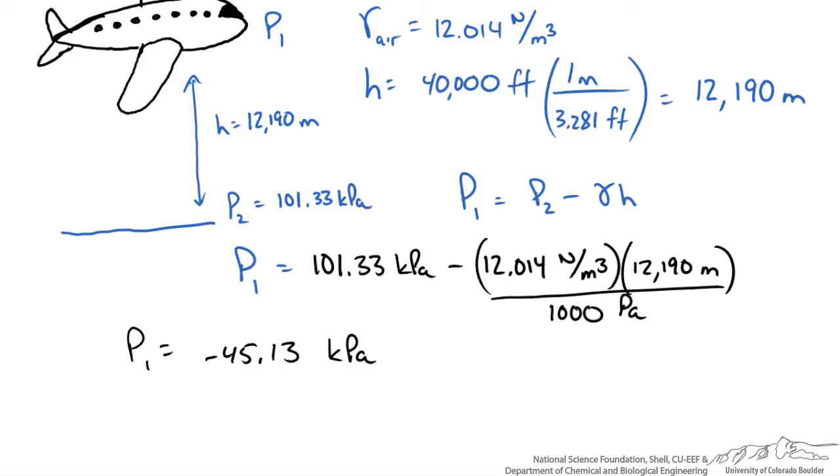We get a pressure of negative 45.13 kilopascals, which is an unrealistic answer. So in this case, assuming that the gas is incompressible is a bad assumption.